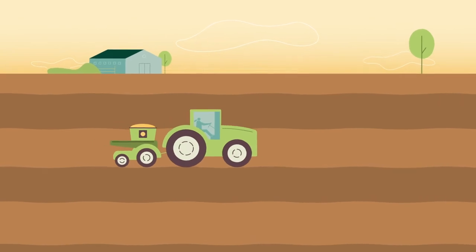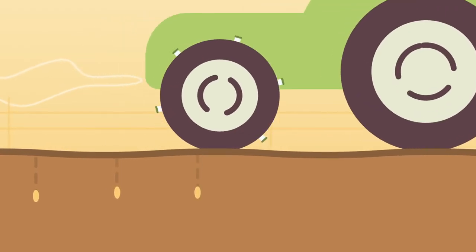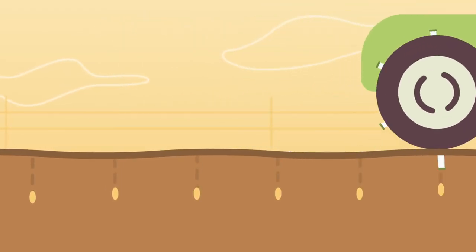In the spring, after preparing the soil, the farmer will then plant each soybean seed roughly an inch deep in the ground.